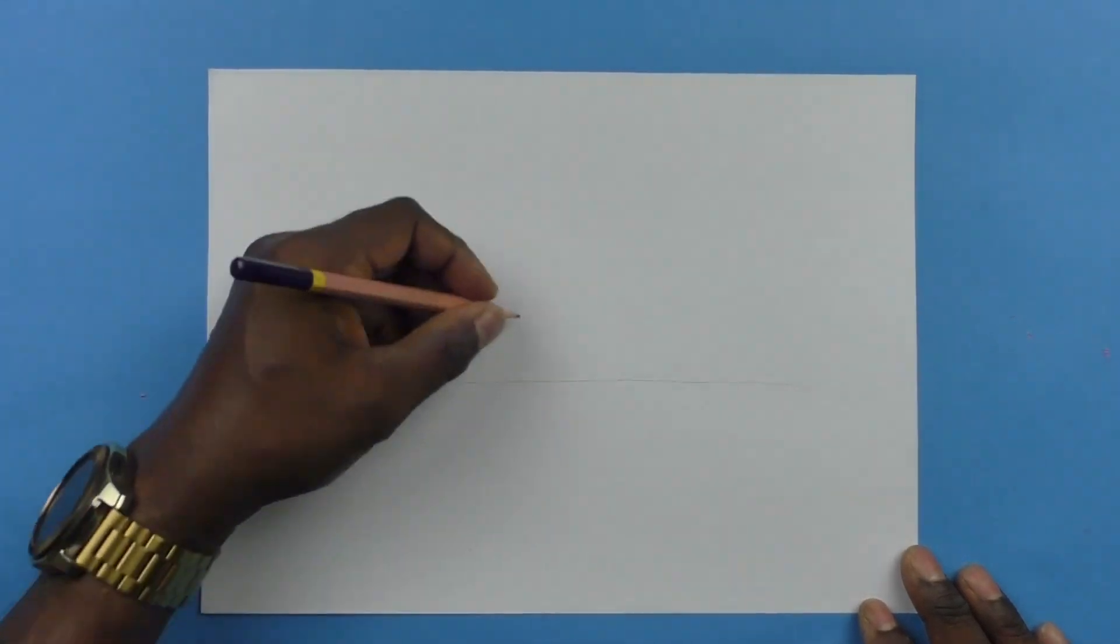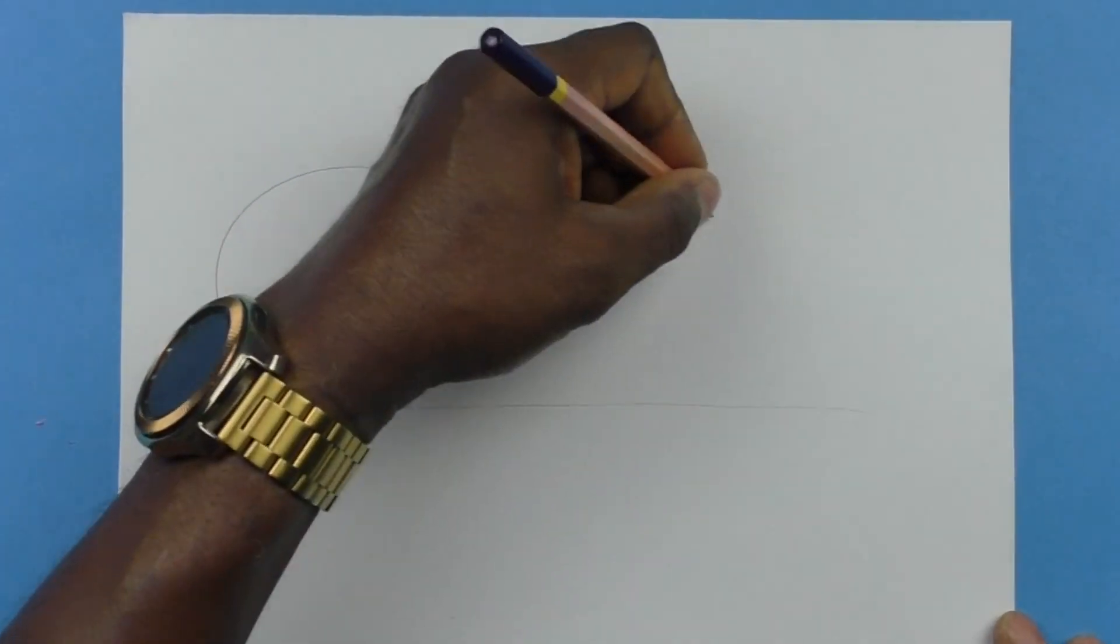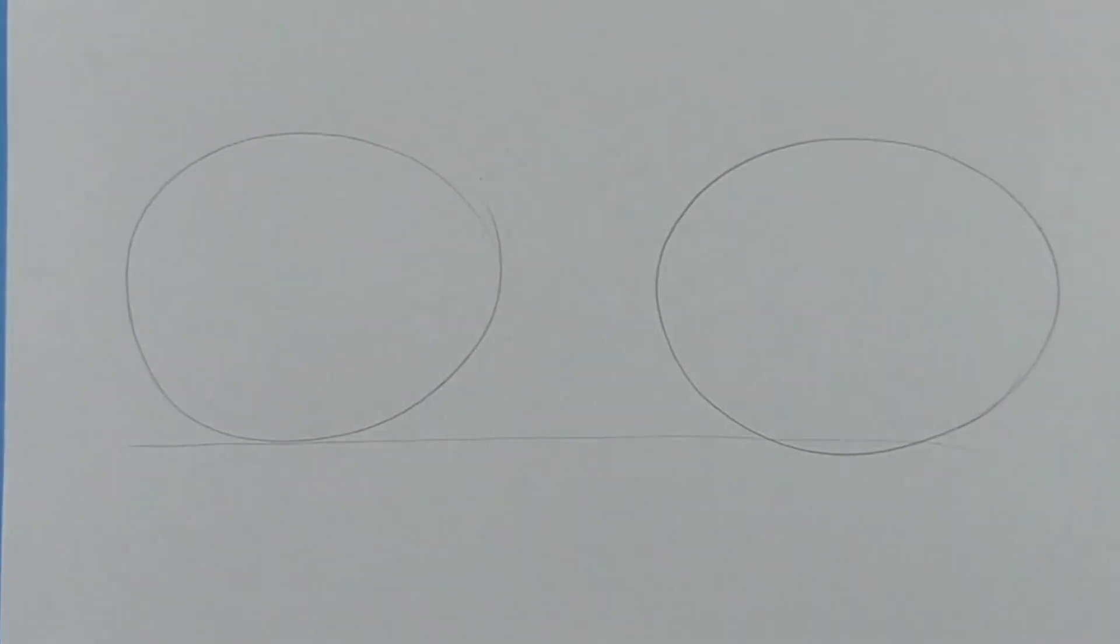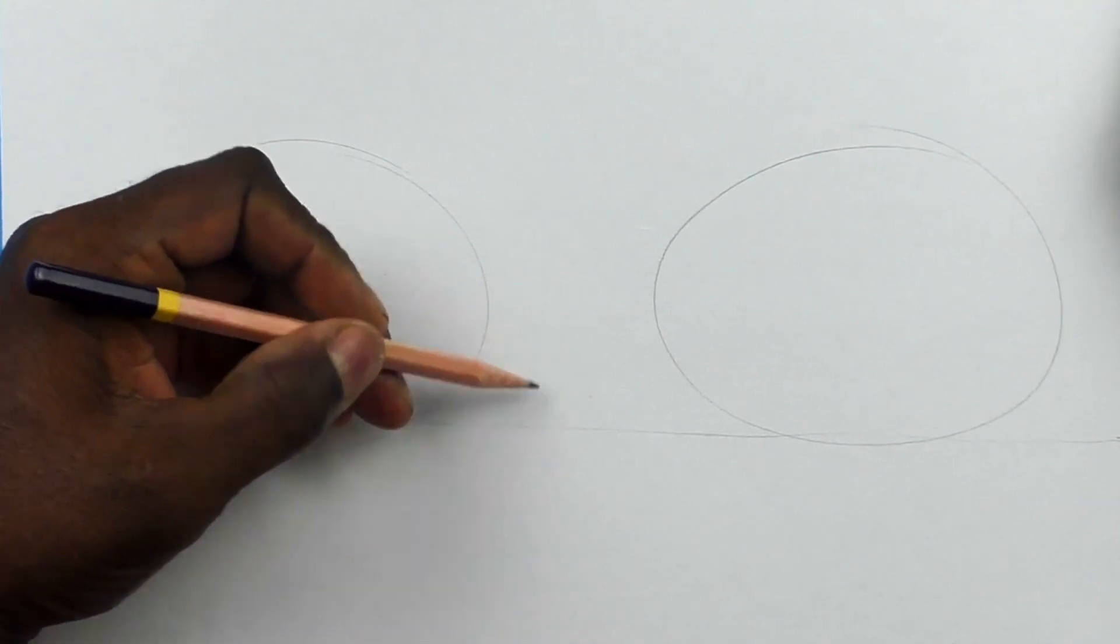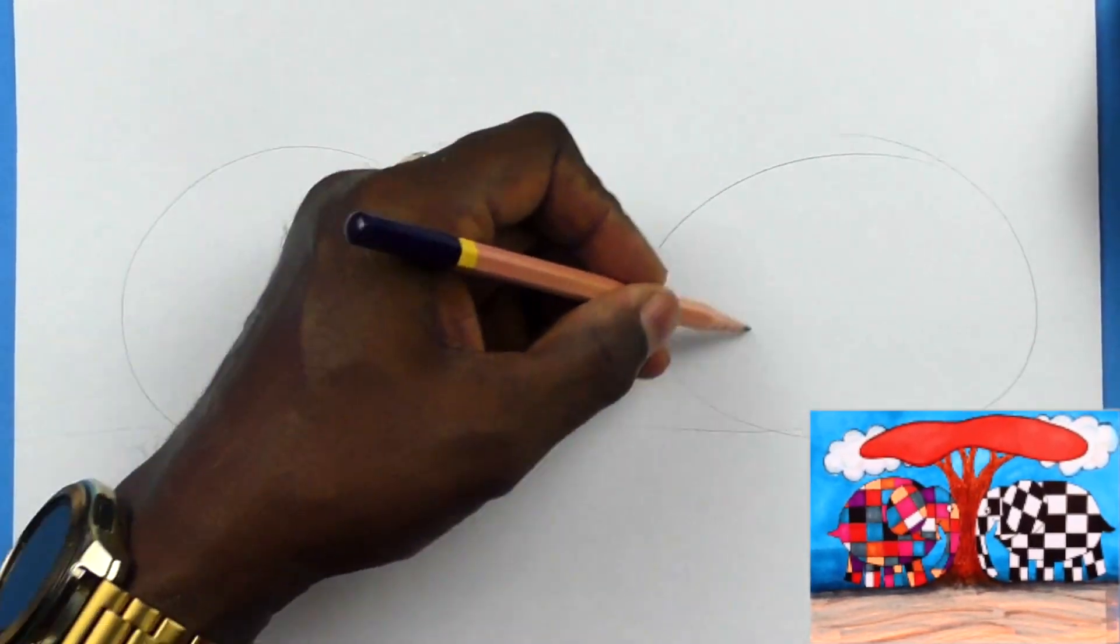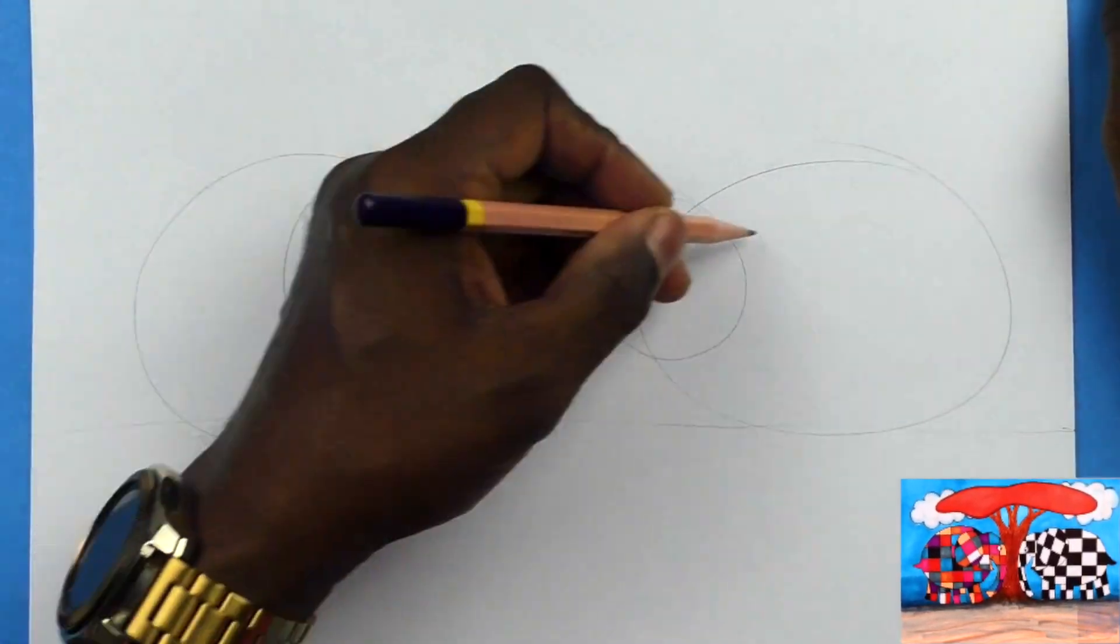I'm drawing a horizontal line and then on top of that I'm going to place two ovals, one for Elmer and one for Wilbur. Ovals are the best shapes for making their bodies. Two circles which will overlap the ovals of their bodies and these will be for the heads.